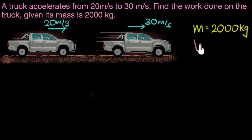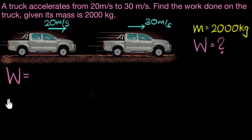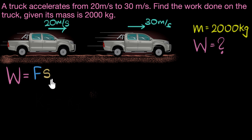We need to calculate the work done. Work done is calculated as force acting on a body multiplied by the displacement of that body. But do I know what the force is? No, that's not given in the problem. Do I know what the displacement is? That's also not given. We are only given the initial and final velocities and the mass.